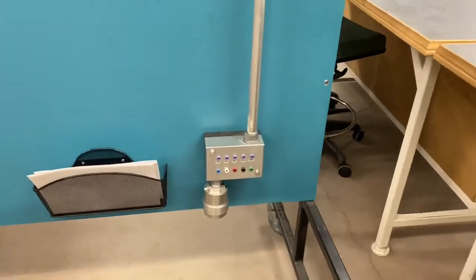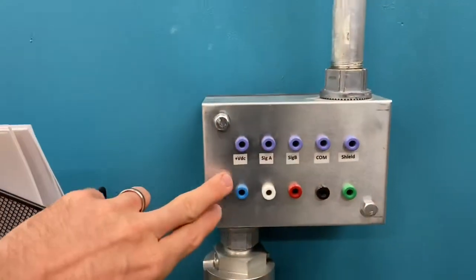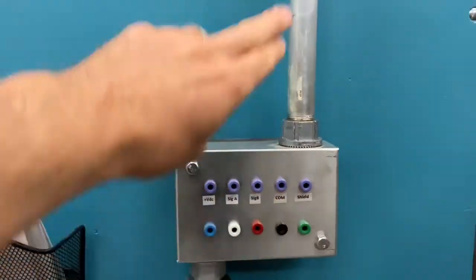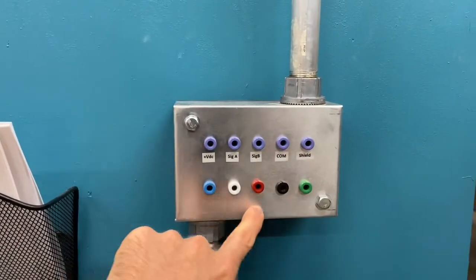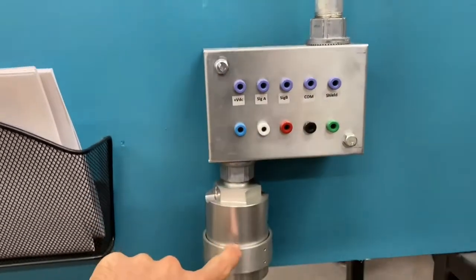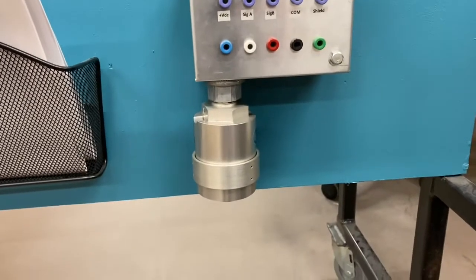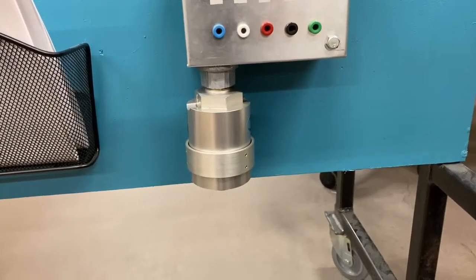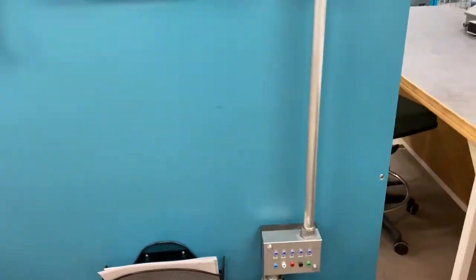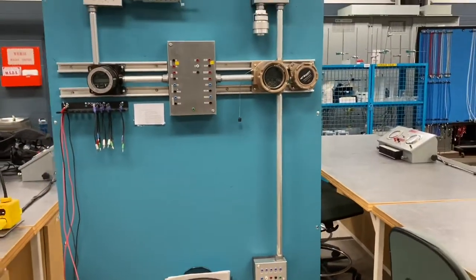Down here, you can see the other one is set up the same way. Purple heads up to the controller, and the colored ones here are the same color as the wires on the sensor. That gives you an idea of the hardware we've been working with today.